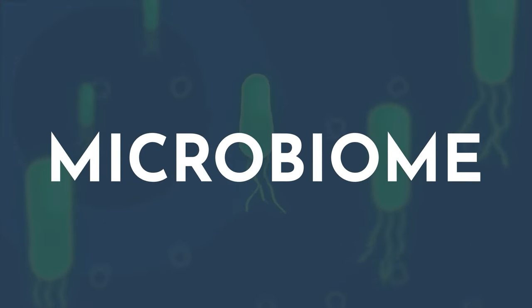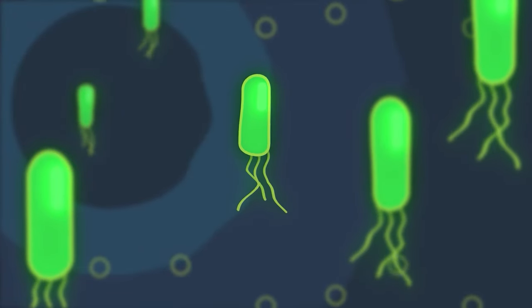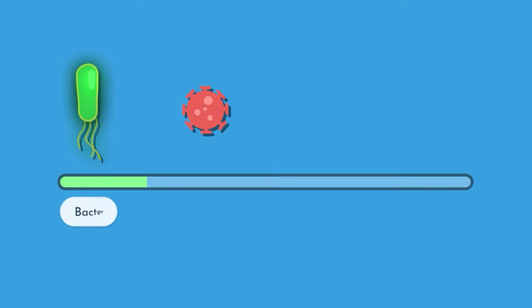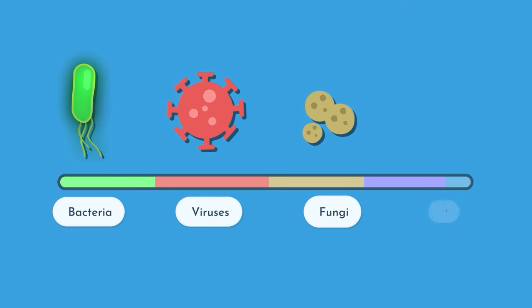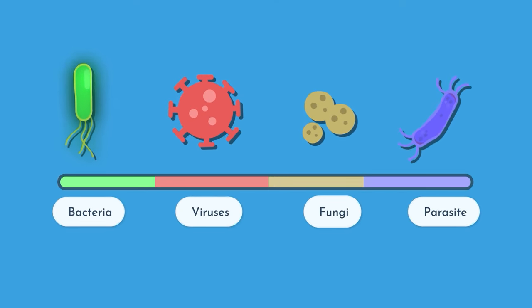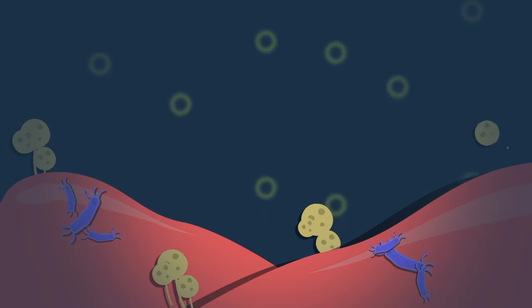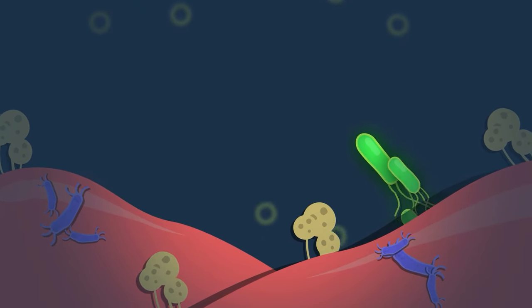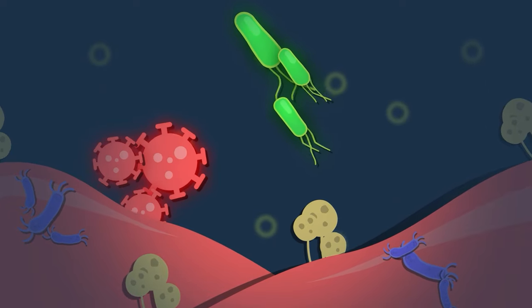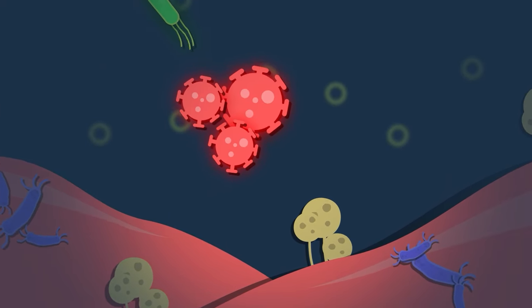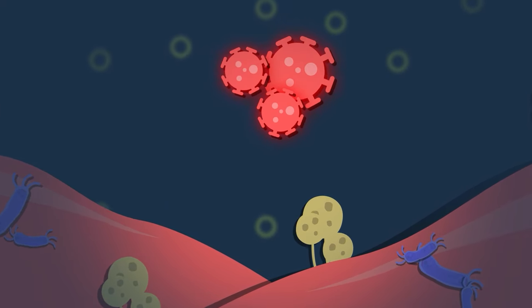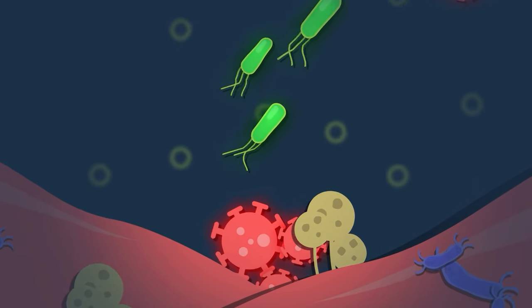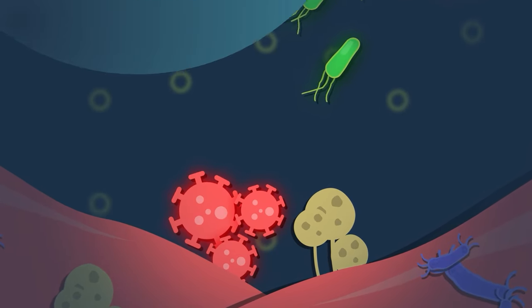The microbes that comprise the microbiome include over a thousand different species of bacteria, viruses, fungi, and in many of us, parasites. The trillions of microorganisms that live in the microbiome affect each other and their environment in various ways. In fact, they appear to influence many aspects of our overall health within the body, both inside the digestive tract and outside of it.